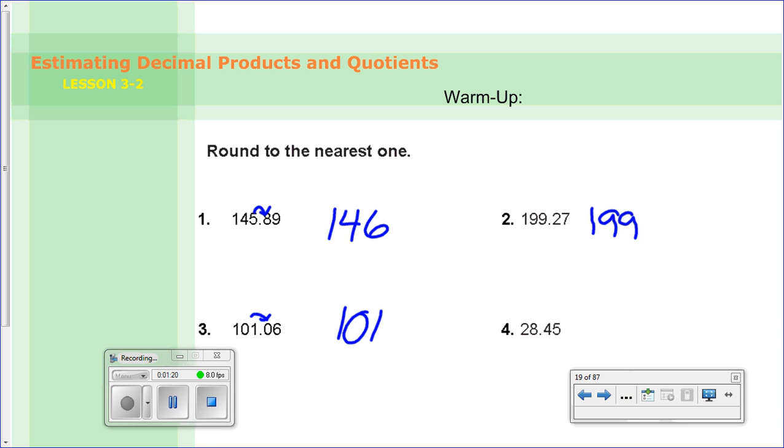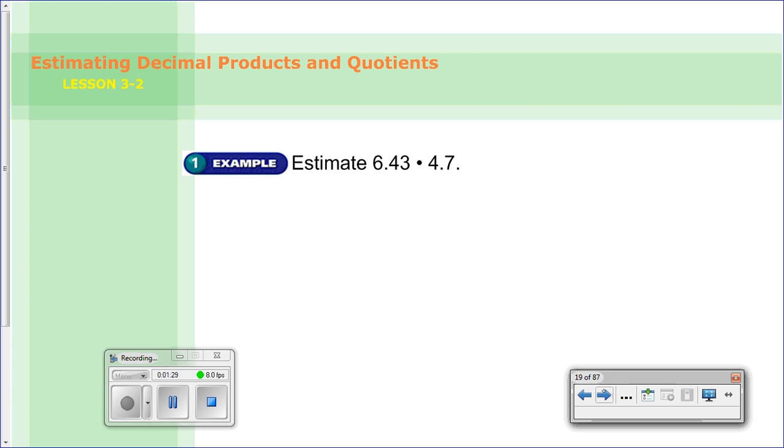And then number 4 we have 28.45. Again, you could look at the number after the ones place. It's a 4, so this would stay 28. Alright, so let's look at today's lesson.